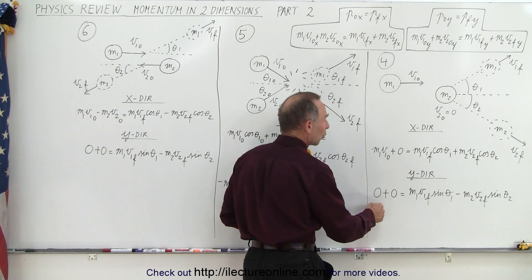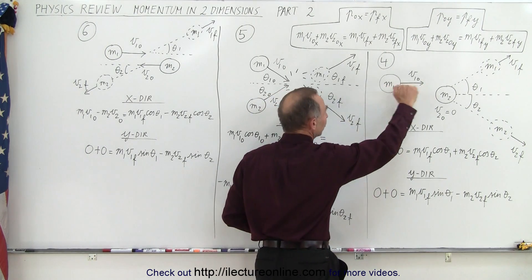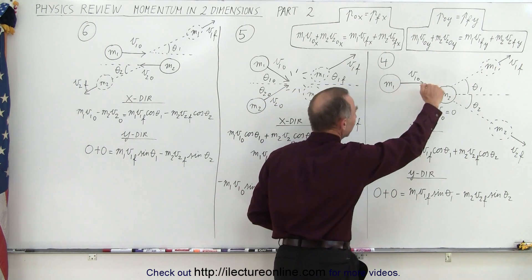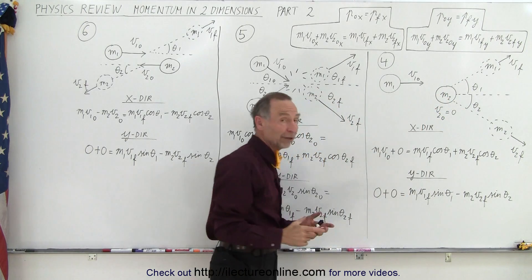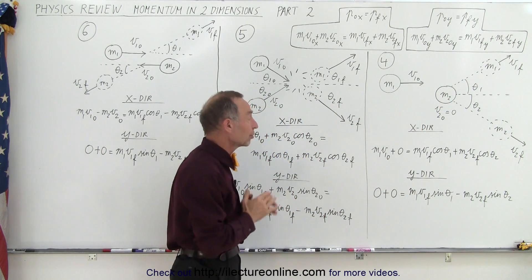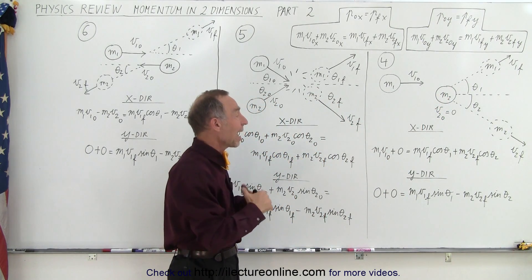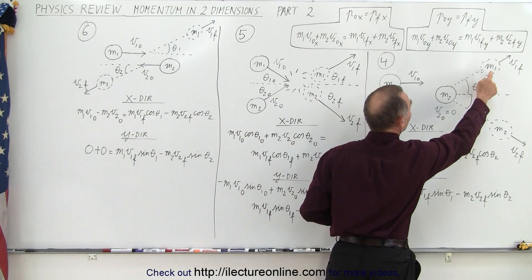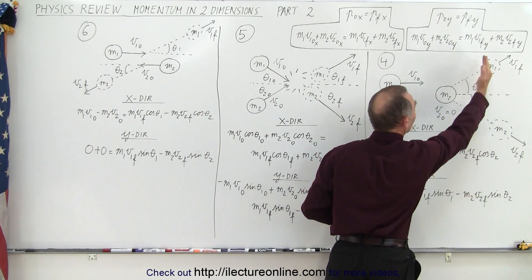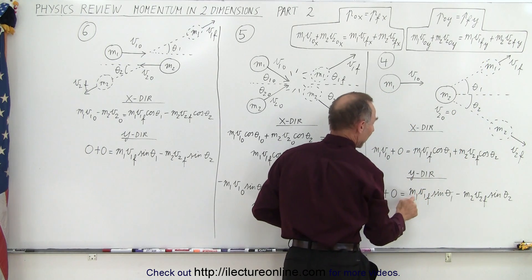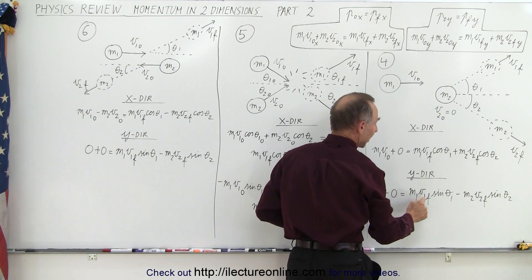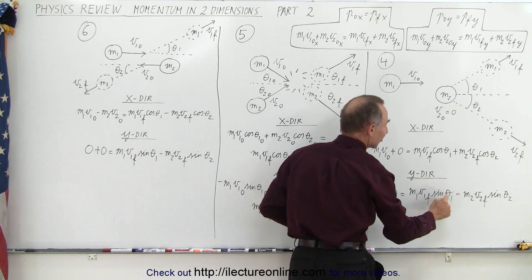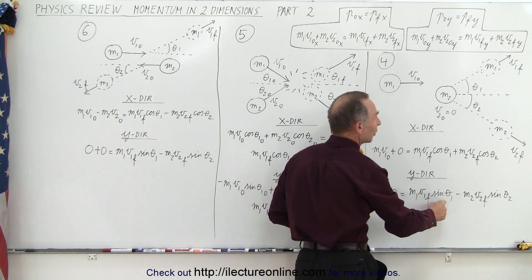The momentum before the collision in the y direction is zero because this object is moving only in the x direction and this object is not moving, so there's no momentum in the y direction. After the collision, the component of the momentum of M1 is in the positive direction, so it's M1 times V1 final times the sine of angle theta 1.